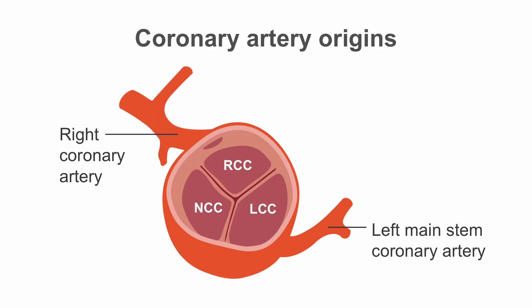When we consider the origins of the coronary arteries, the normal configuration is that the right coronary artery arises from the right coronary cusp, whilst the left main stem arises from the left coronary cusp and then bifurcates into two separate arteries: the left anterior descending artery and also the left circumflex artery.